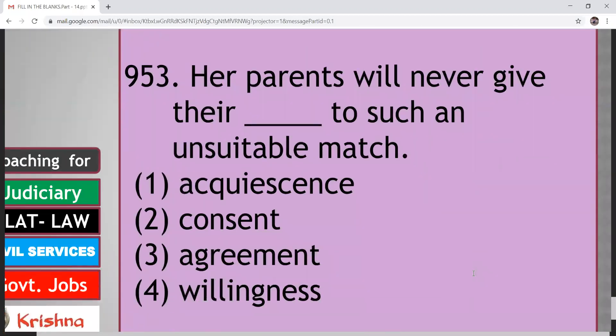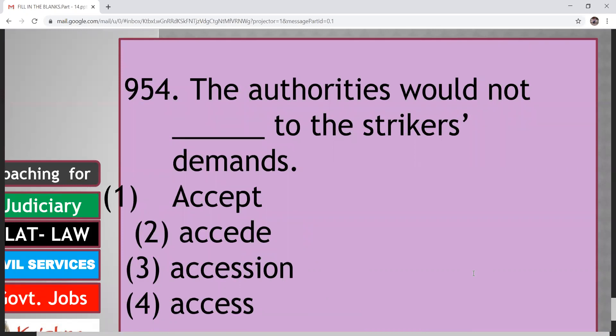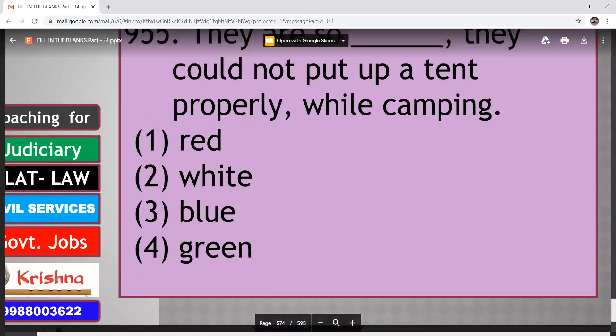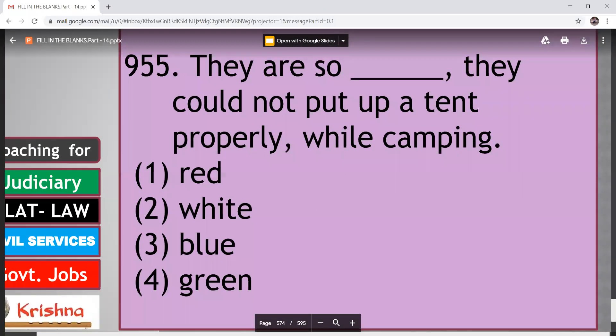Her parents will never give up their dash to such an unsuitable match. Acquiesce, consent, agreement, willingness. So here you have to be consent. Her parents will never give up their consent to such an unsuitable match. Next. Authorities would not dash to the striker's demand. Accept, accede, accession, assess. Accede means agree to demand, request, or treaty. So here answer will be accede. Authorities would not accede to the striker's demand. They are so dashed, they could not put up a tent properly while camping. Red, white, blue, green. They are so green. Green means if person young and lacking experience. That is fourth option.